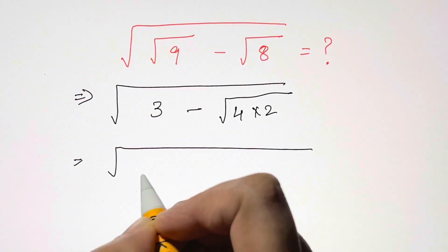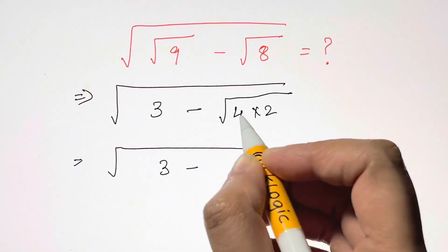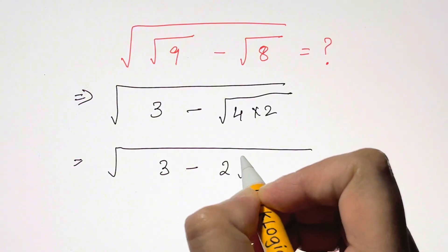Now what do we have under the root? 3 minus square root of 4 is 2, and then we have root 2.